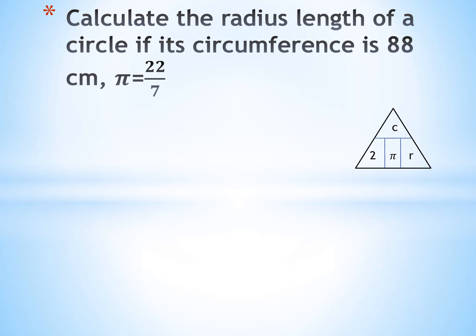So I use the magic triangle of the rule of circumference. Circumference equals 2πr. So r equals C over 2π — circumference over 2π. Equal 88 over 2 times 22 over 7, equal 28 over 7. So r equals 14 cm.